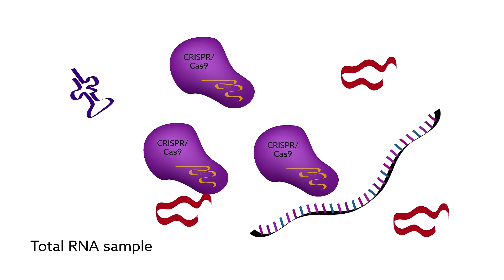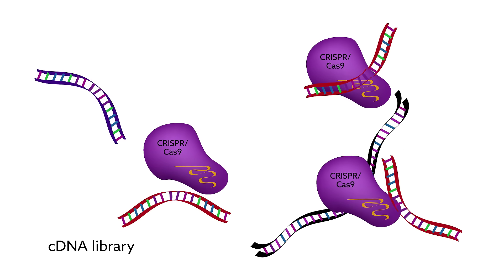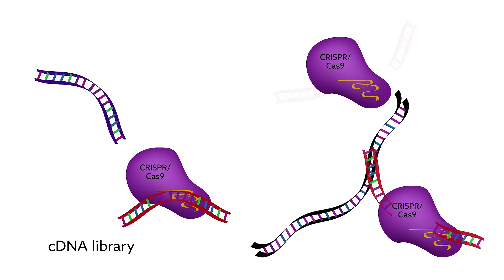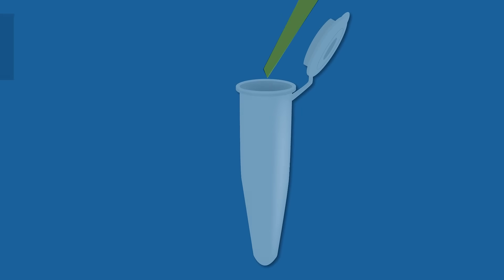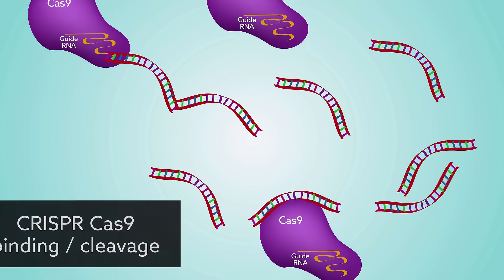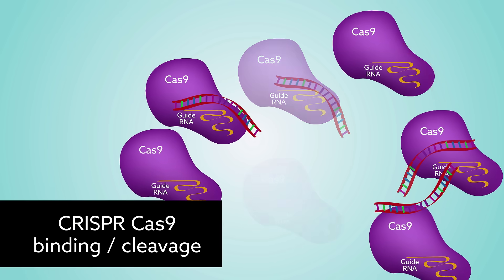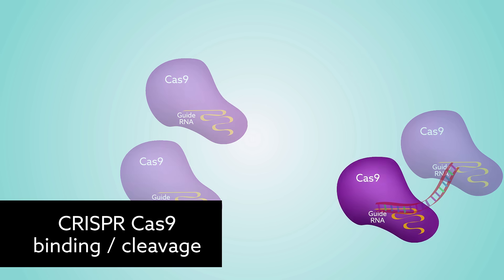We've made it easy to remove unwanted ribosomal RNA. Using the CRISPR-Cas9 enzyme, we can target unwanted ribosomal RNA sequences from a DNA library. Start with the total RNA from a sample and perform your normal NGS library prep without depletion. Then, our specially designed guide RNAs bind to common ribosomal RNA sequences. This allows the CRISPR-Cas9 enzyme to cleave those unwanted sequences.